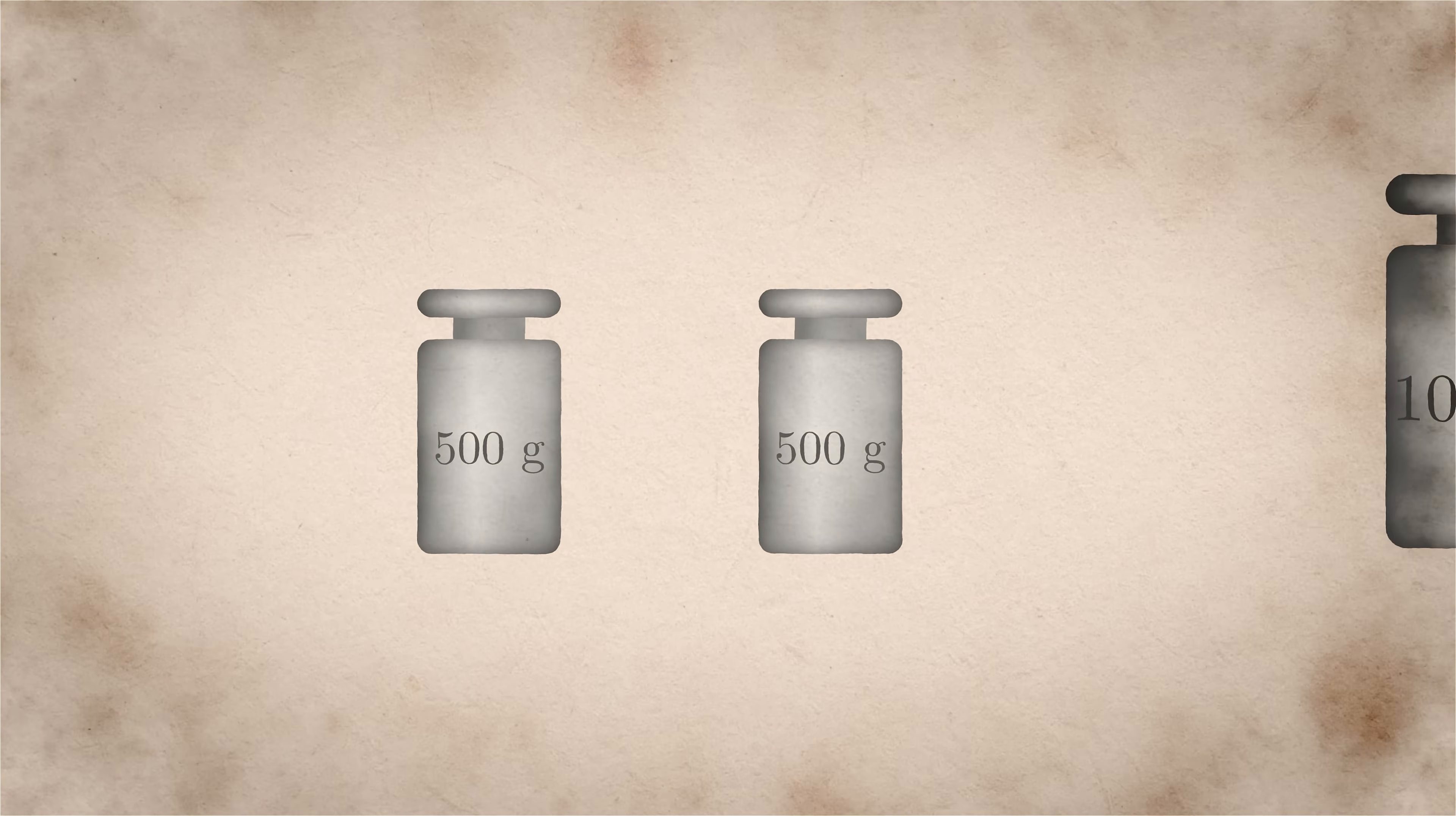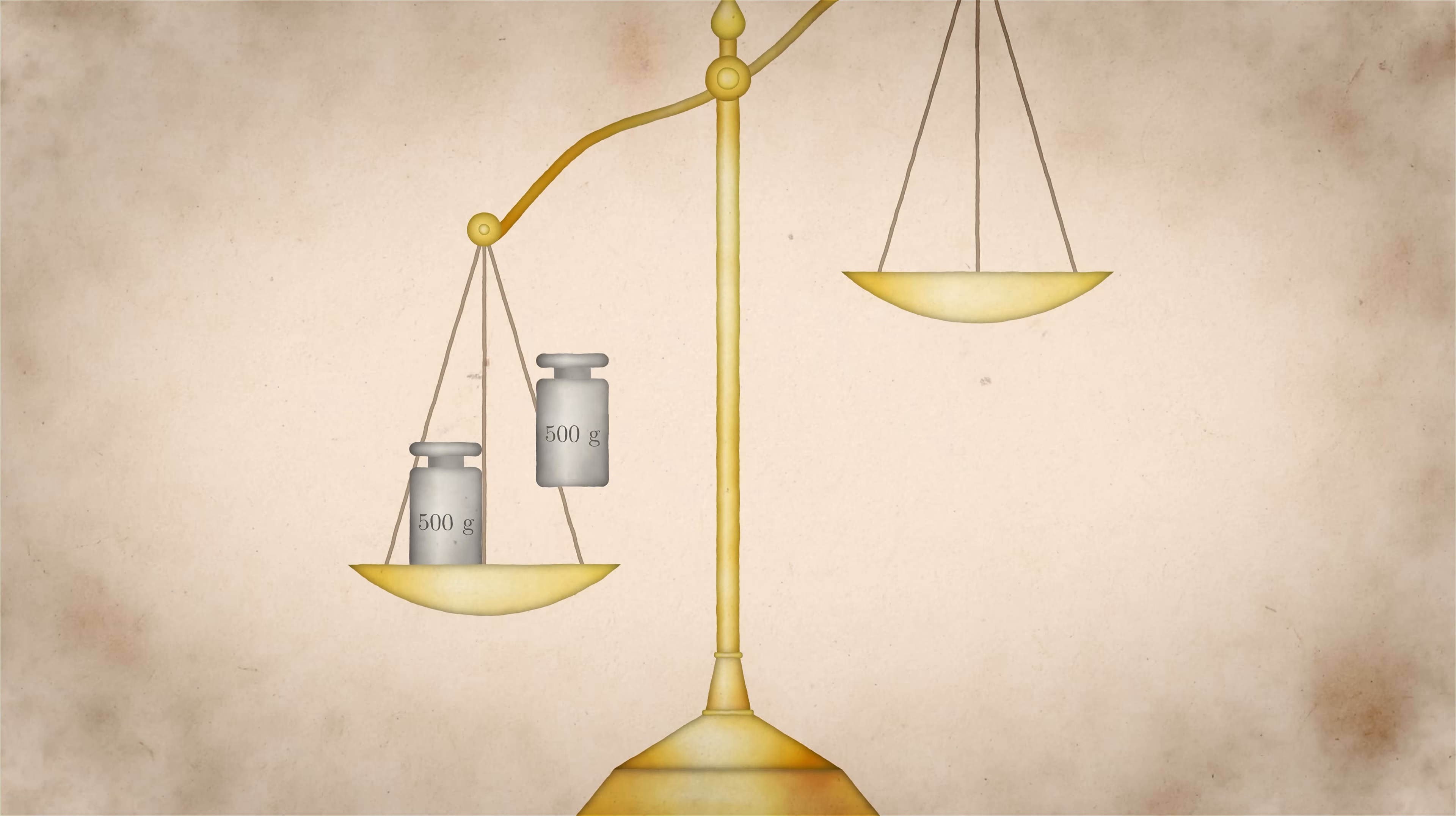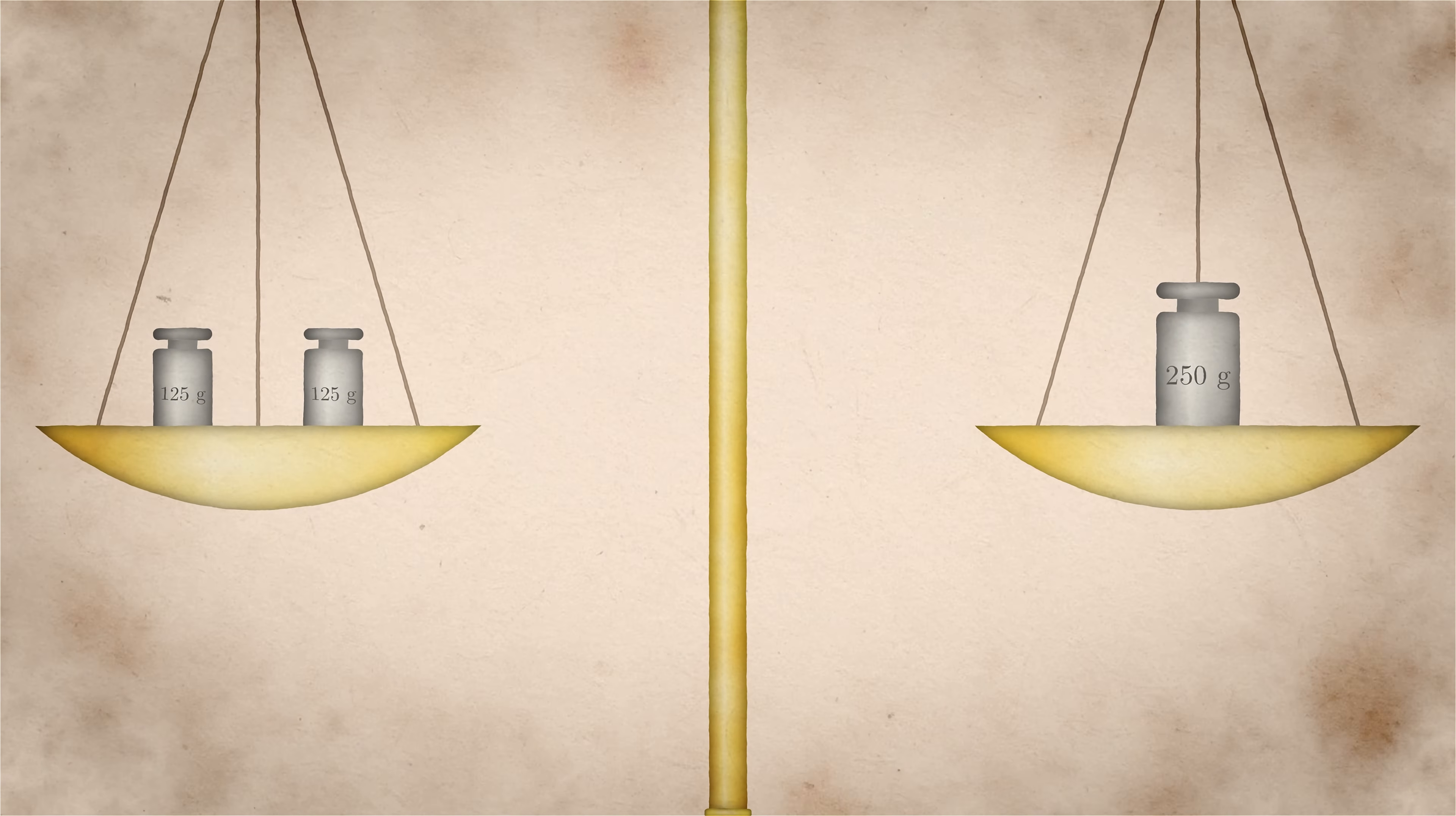You take two 500 gram masses and you make sure that they're equal on your balance, right? And then you put both of those on your balance and compare that against a kilogram. Would you go like two 500s and then two 250s and then two 125s? Like you just... Yeah.